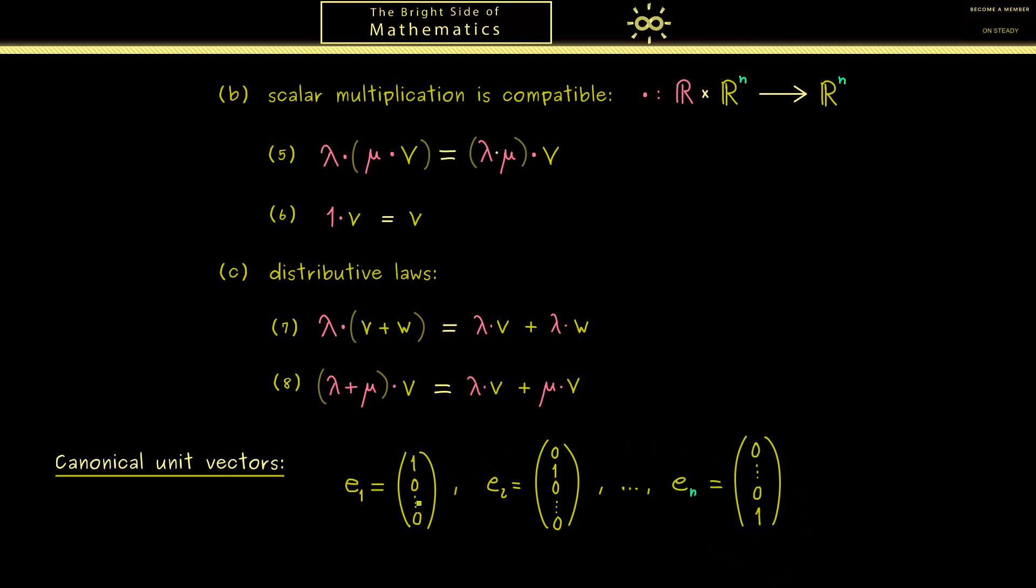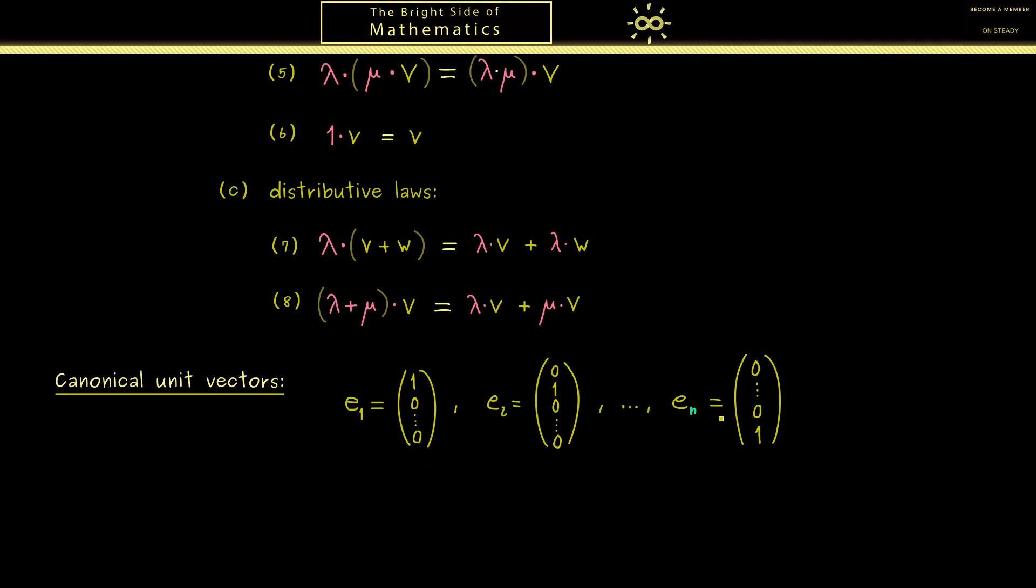Now you might ask, why do we need these special vectors anyway? And indeed, I can immediately give you one application, because we can write every vector v as a linear combination of these vectors. For this, we just take our vector v with components v1, v2, and so on.